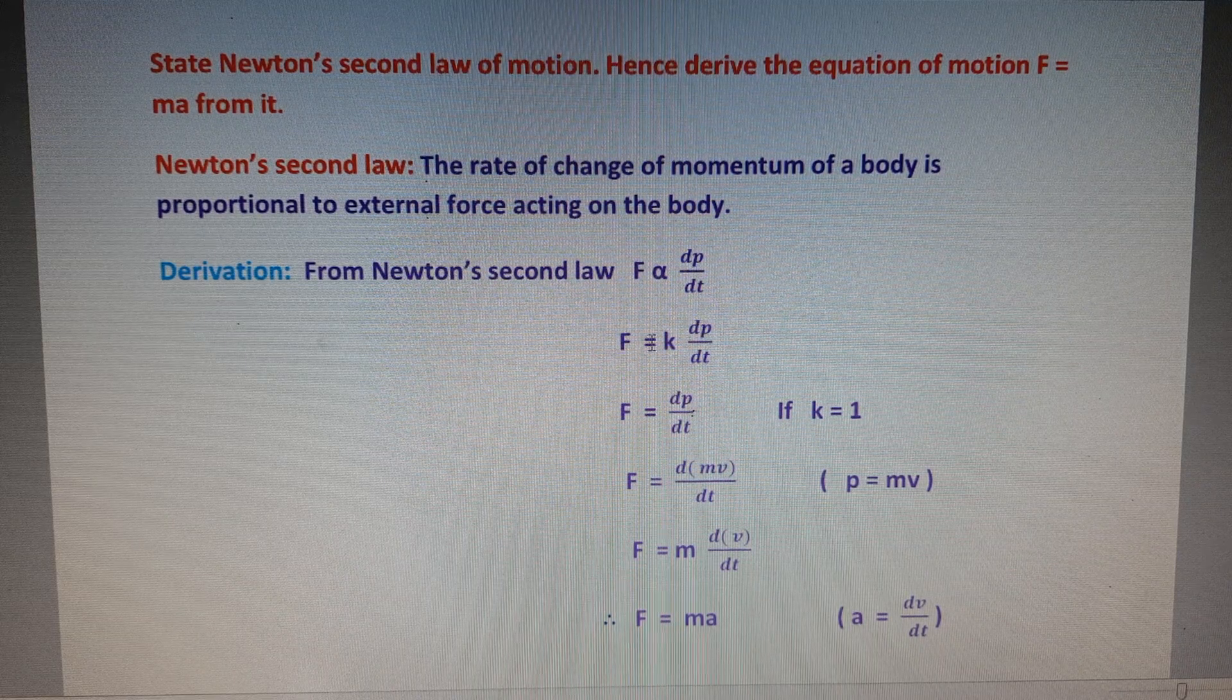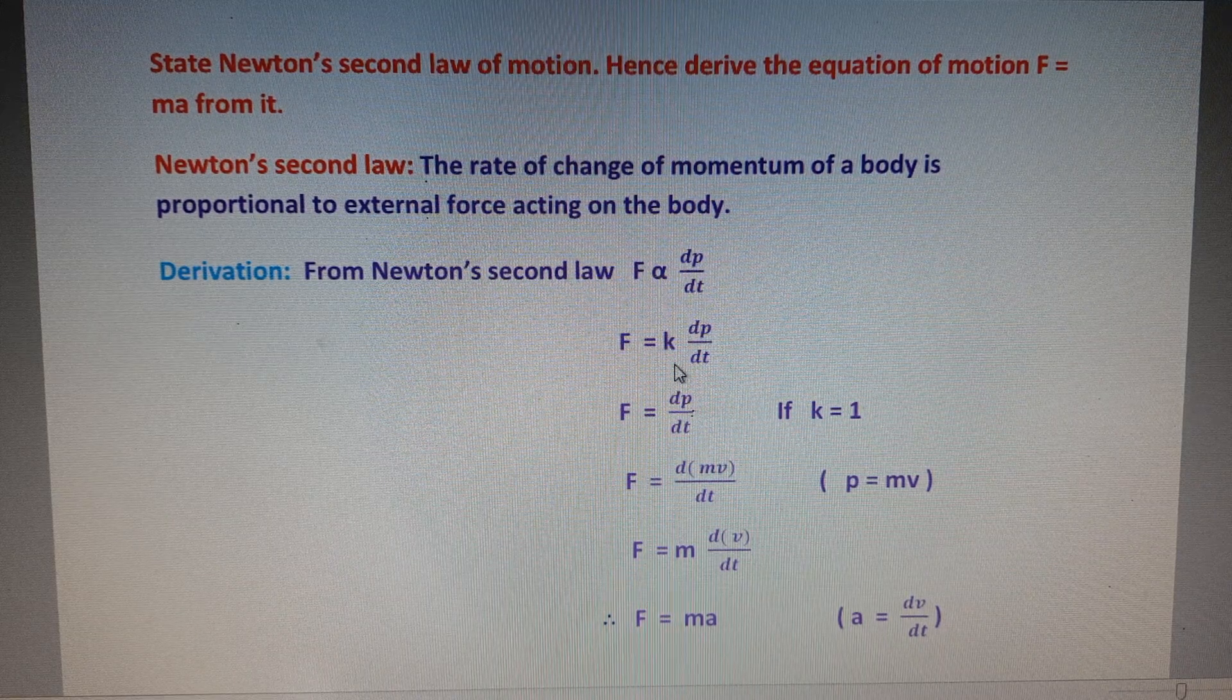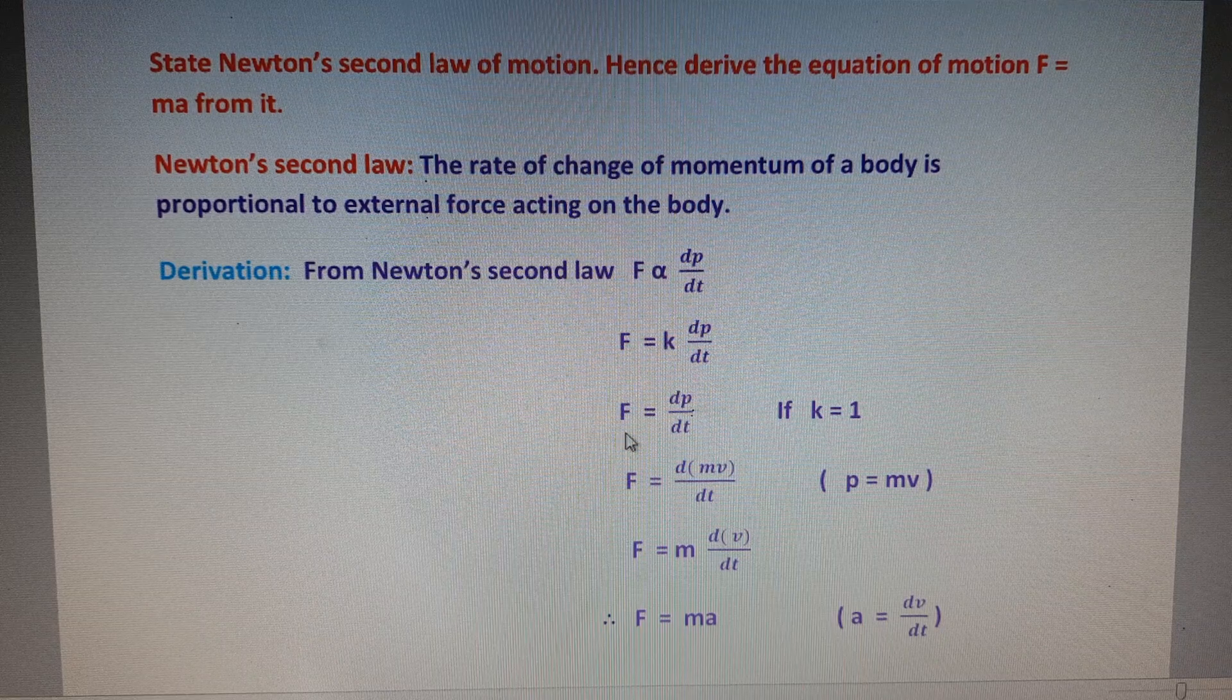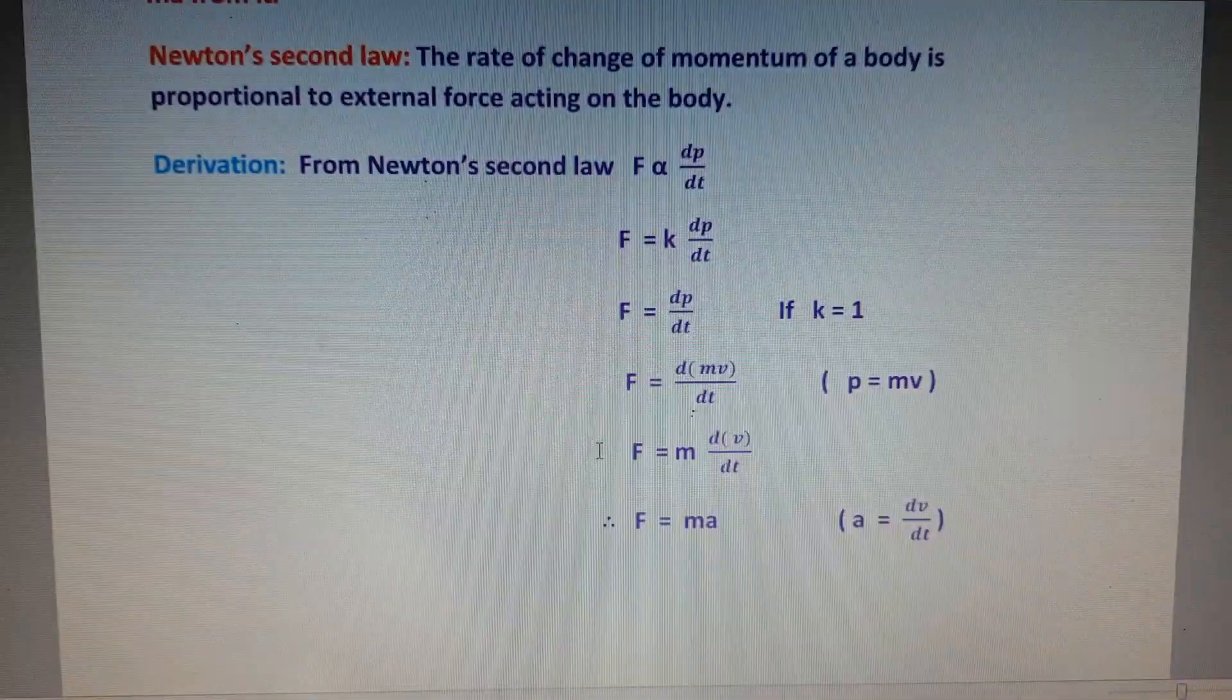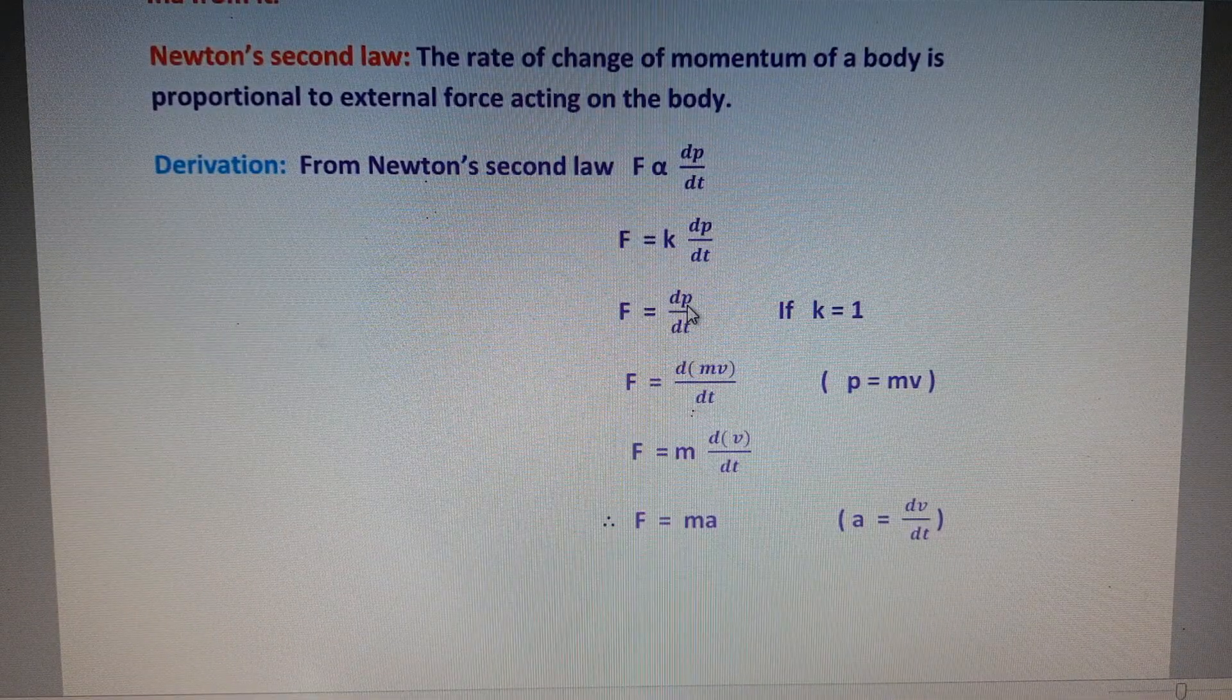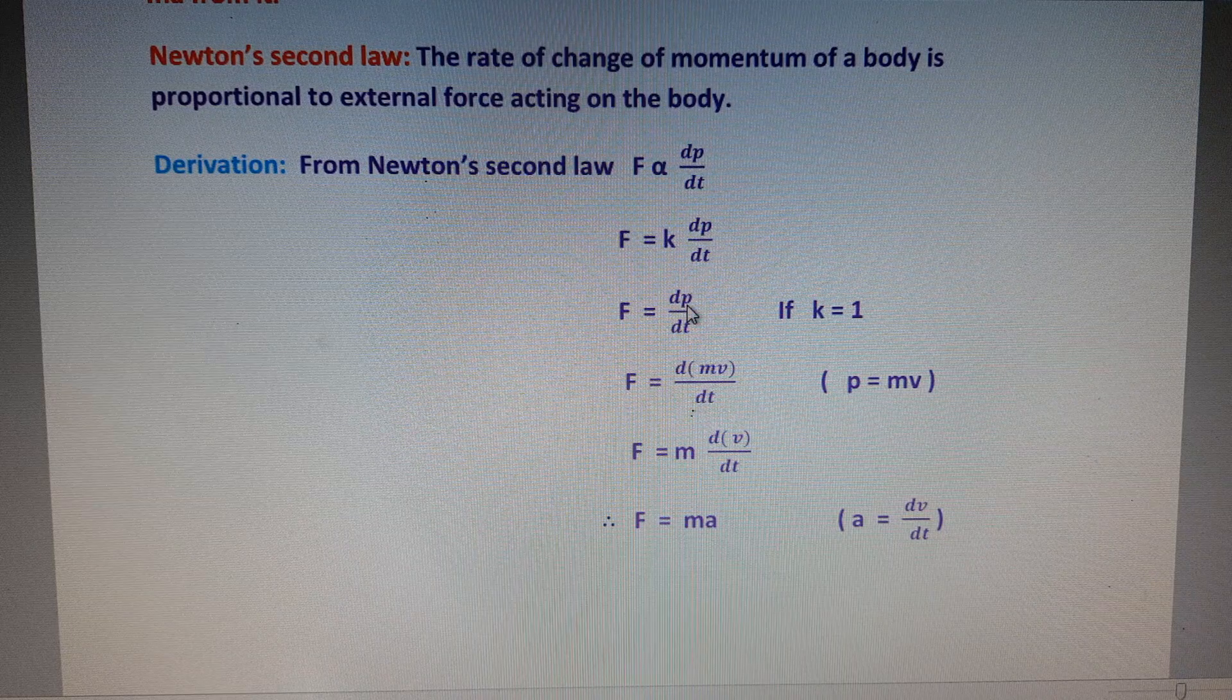F is equal to k dp/dt. Since k = 1, F = dp/dt. Next, p is momentum, the product of mass and velocity.